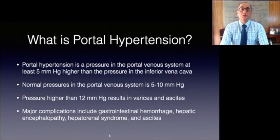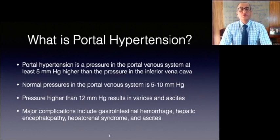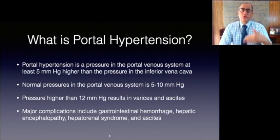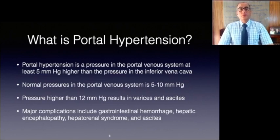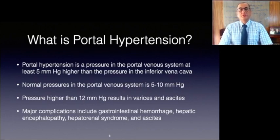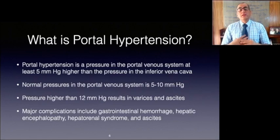Portal hypertension is defined as a pressure in the portal venous system that is at least 5 mmHg higher than the pressure in the inferior vena cava. This increased pressure results from a functional obstruction to blood flow from any point in the portal system's origin in the splenic bed through the hepatic veins into systemic circulation, or from an increase in blood flow in the system. Understanding the pathophysiology is important for therapeutic management including pharmacological therapies, endoscopic therapies, and surgical and radiological shunting procedures. The complications of portal hypertension — including gastrointestinal hemorrhage, hepatic encephalopathy, hepatorenal syndrome, and ascites — continue to be causes of significant morbidity and mortality. Portal hypertension remains one of the most serious complications of chronic liver disease.